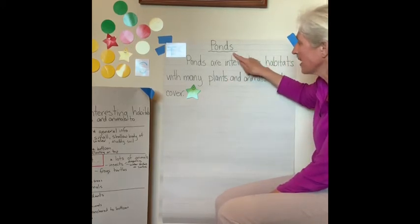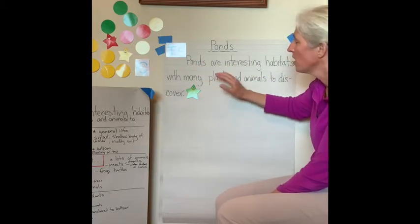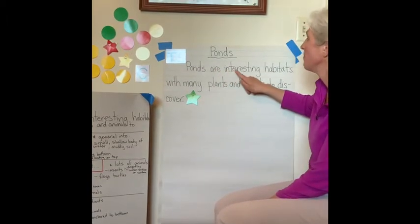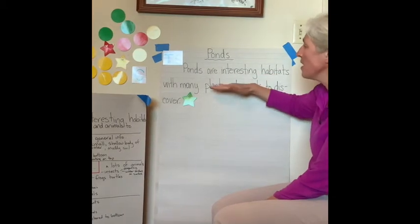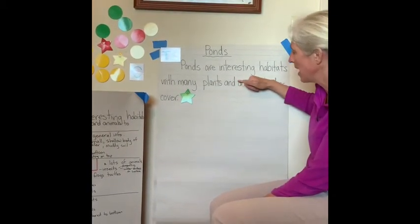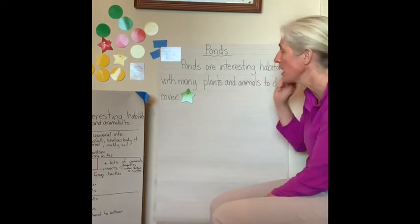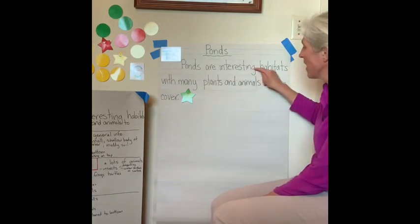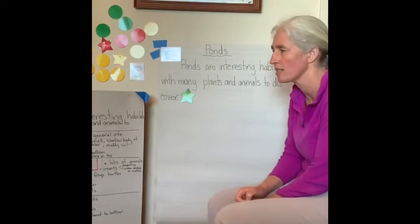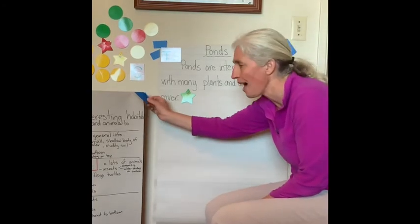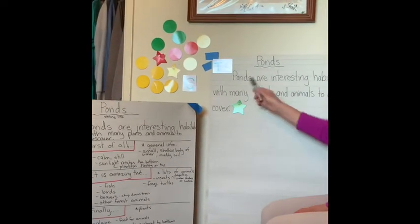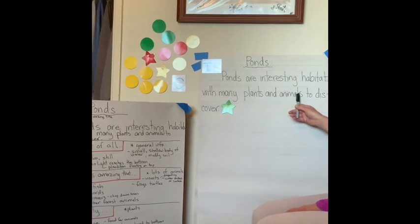Letters that hang down like Y's, P's, and G's need to hang below the line. Keep an eye on letter placement as I write. I'm going to use my graphic organizer as a tool — don't put it away after you've done it, it's a tool for you as you do your writing. Ponds are interesting habitats with many plants and animals to discover. Now going to my graphic organizer, my first transition is: First of all. You should have your sight word lists available. First of all, I'm going to give general information about a pond — that ponds are shallow bodies of water and that sunlight can go to the bottom.